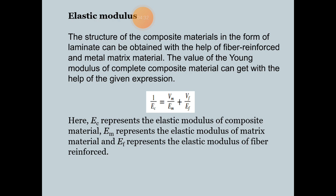Next is elastic modulus. The elastic modulus of composite materials in laminate form can be determined using fiber-reinforced and metal matrix materials. The Young's modulus of composite materials can be calculated using the formula: 1/Ec = Vm/Em + Vf/Ef. Here Ec is the elastic modulus of the composite, Em is the elastic modulus of the matrix, and Ef is the elastic modulus of the fiber reinforcement.